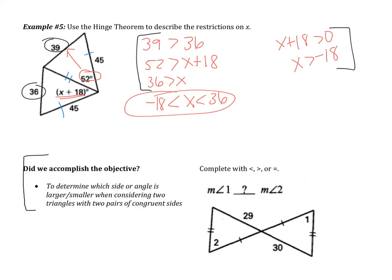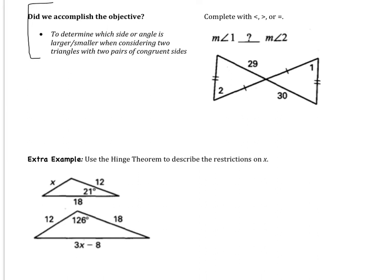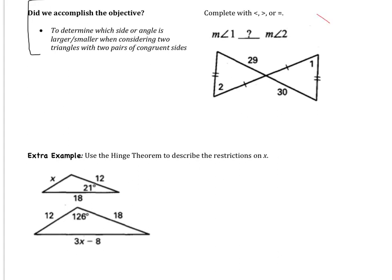You have two last examples to do: the objective example and the extra example. When you come to class tomorrow, I will be making sure that you have both examples done. If you do not do the extra example, you will not receive credit for the video. If you don't know how to do it or get the problem wrong, that's okay — but at least show that you attempted it using the hinge theorem. This is very similar to example five. Good luck, and I will see you tomorrow.